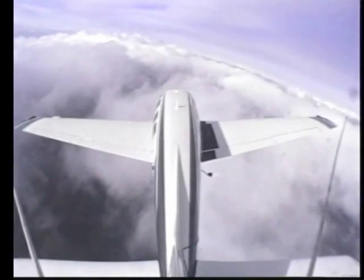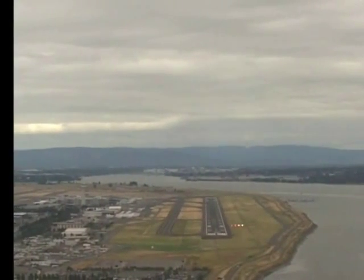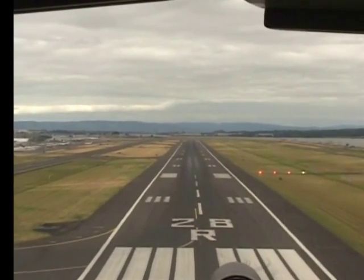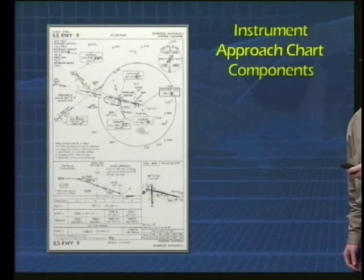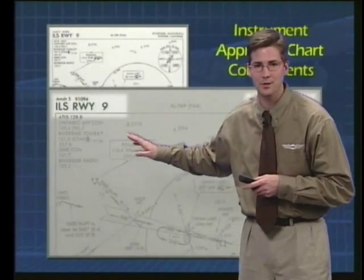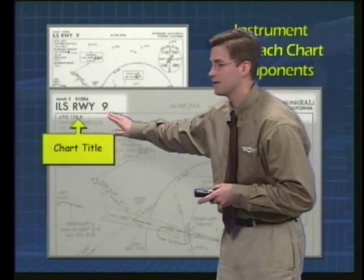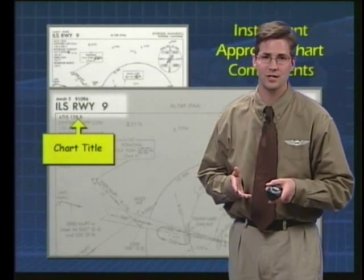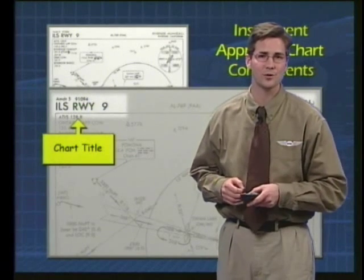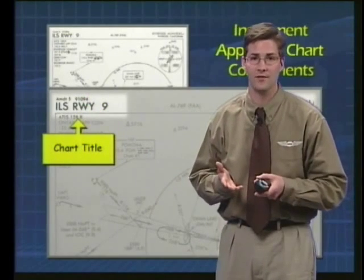An instrument approach is really nothing more than a specified plan for transitioning an aircraft from the en route airway structure on down to the airport. Let's start our review of instrument approaches by first defining some terms. We'll take a look at an instrument approach chart like this one right here. This happens to be the ILS Runway 9 at Riverside Municipal Airport in Riverside, California. The title of the chart will always be shown right up at the top where it's very easy to see. This is also the area that shows what minimum equipment must be on board the aircraft in order to fly the approach. In this case, at least one localizer receiver, one glide slope receiver, and one marker beacon receiver must be installed — all just the components of an ILS approach.